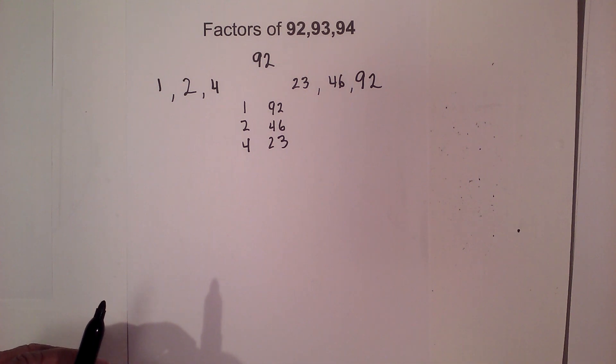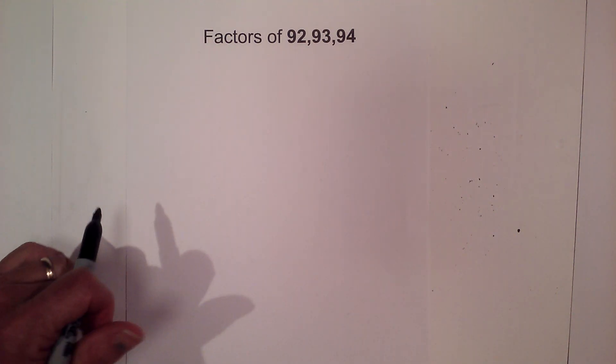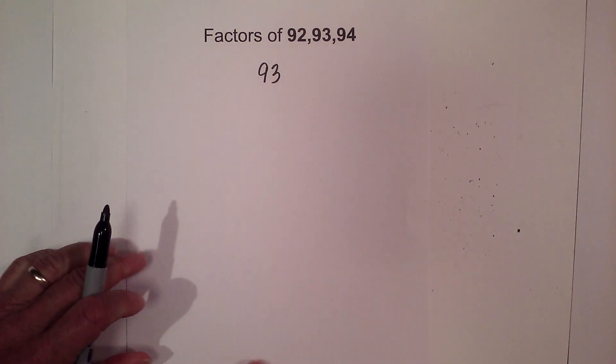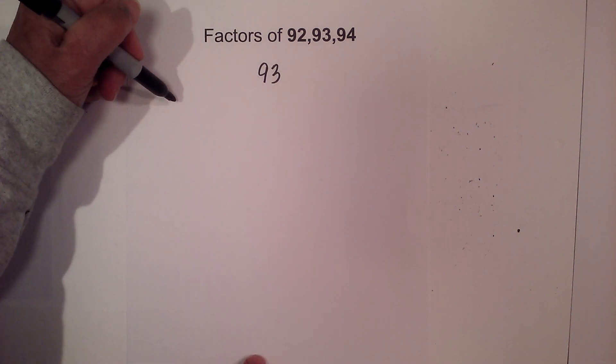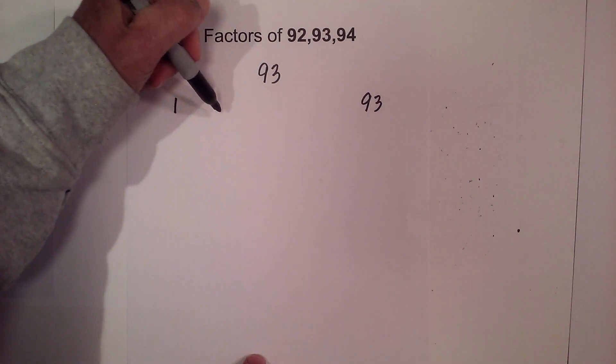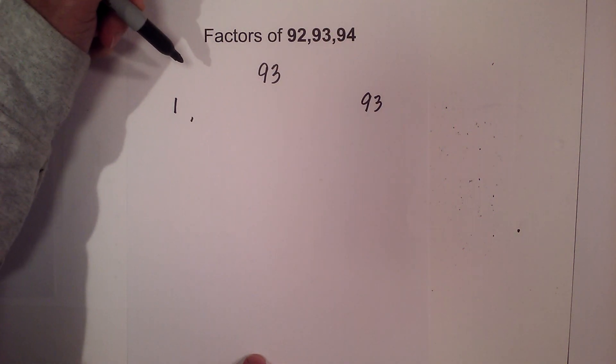Now let's look at 93. Now let's get started with 93. 93 is a composite number. And let's start with 1 times 93. And then 2 will not go into 93.